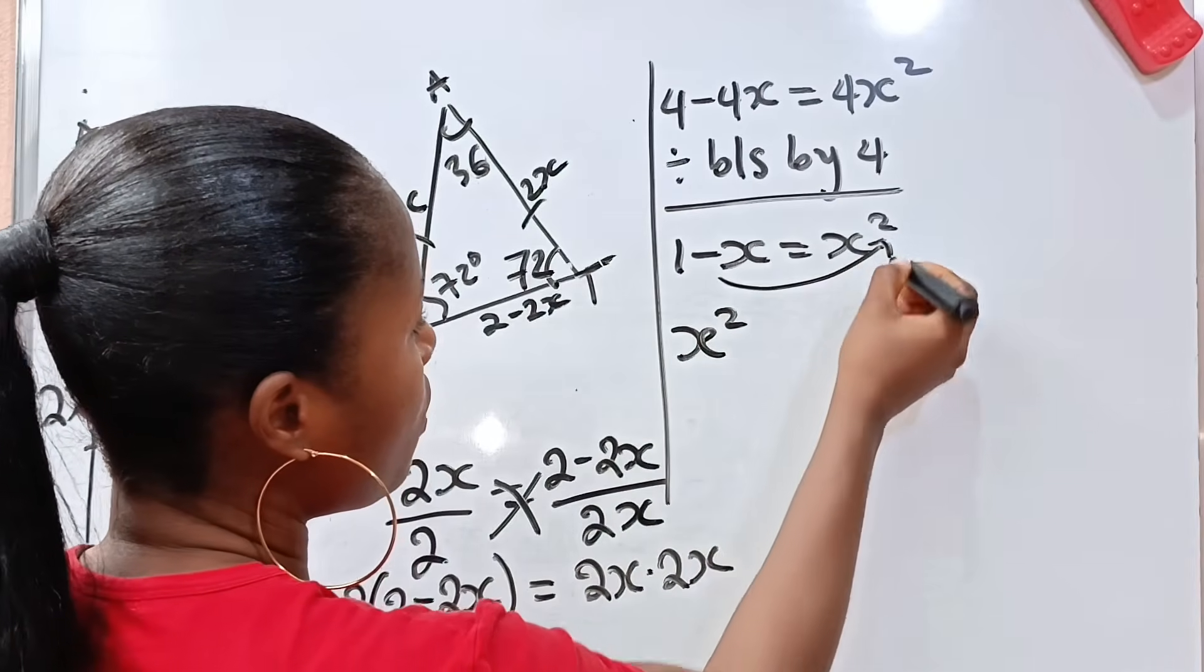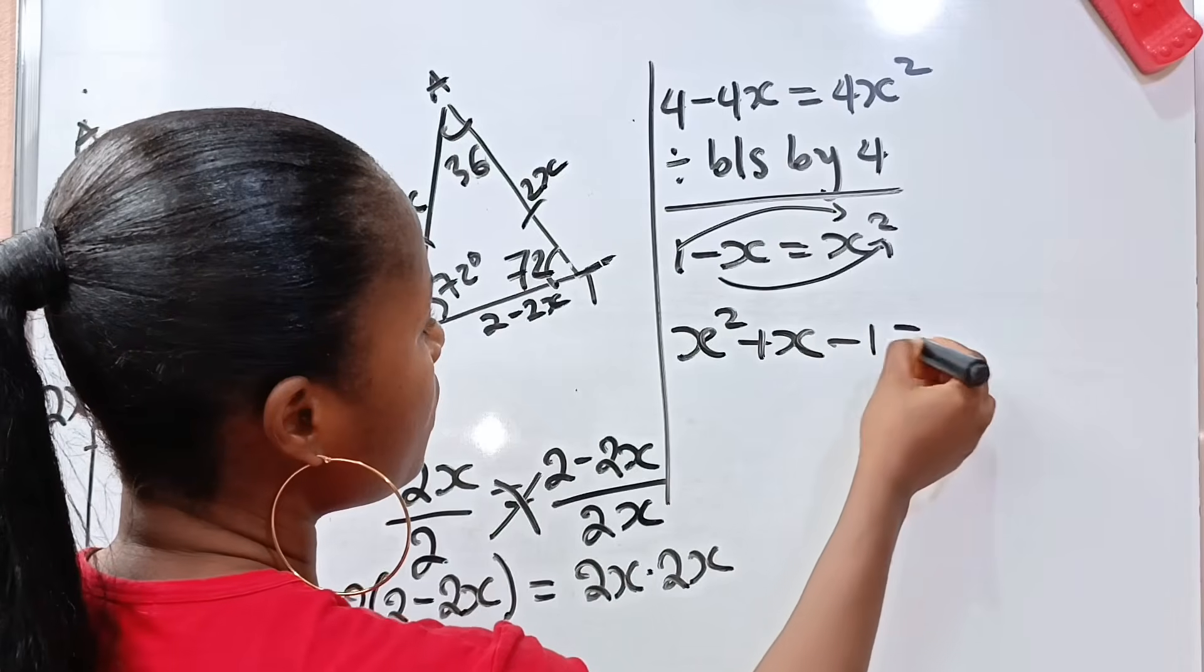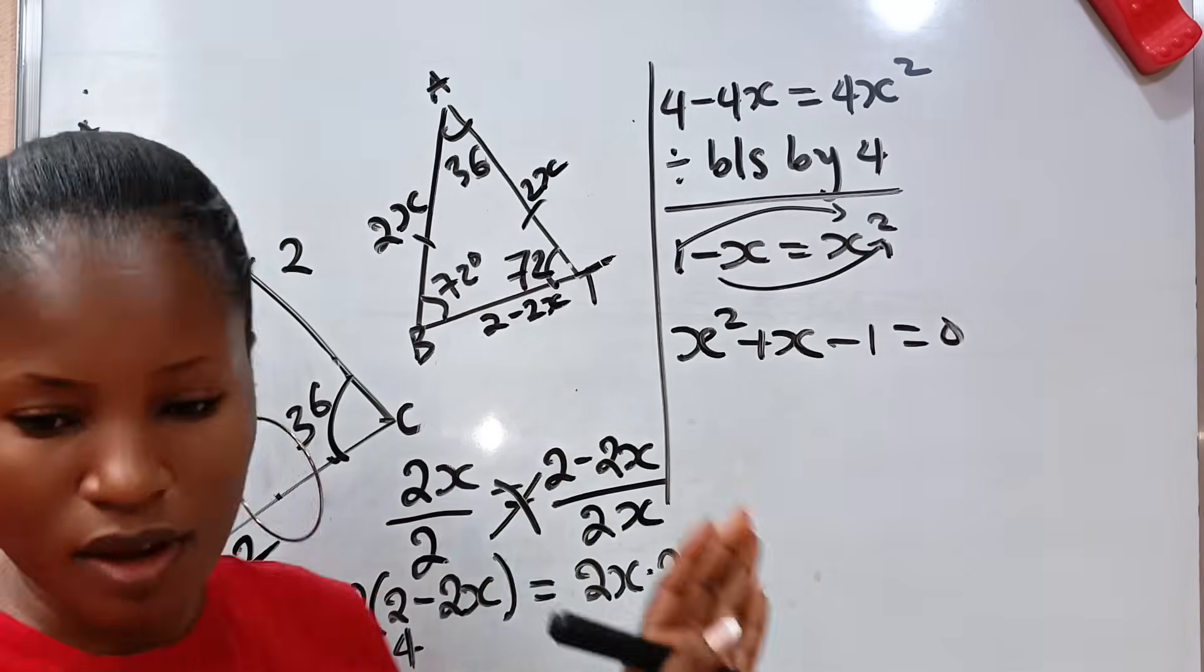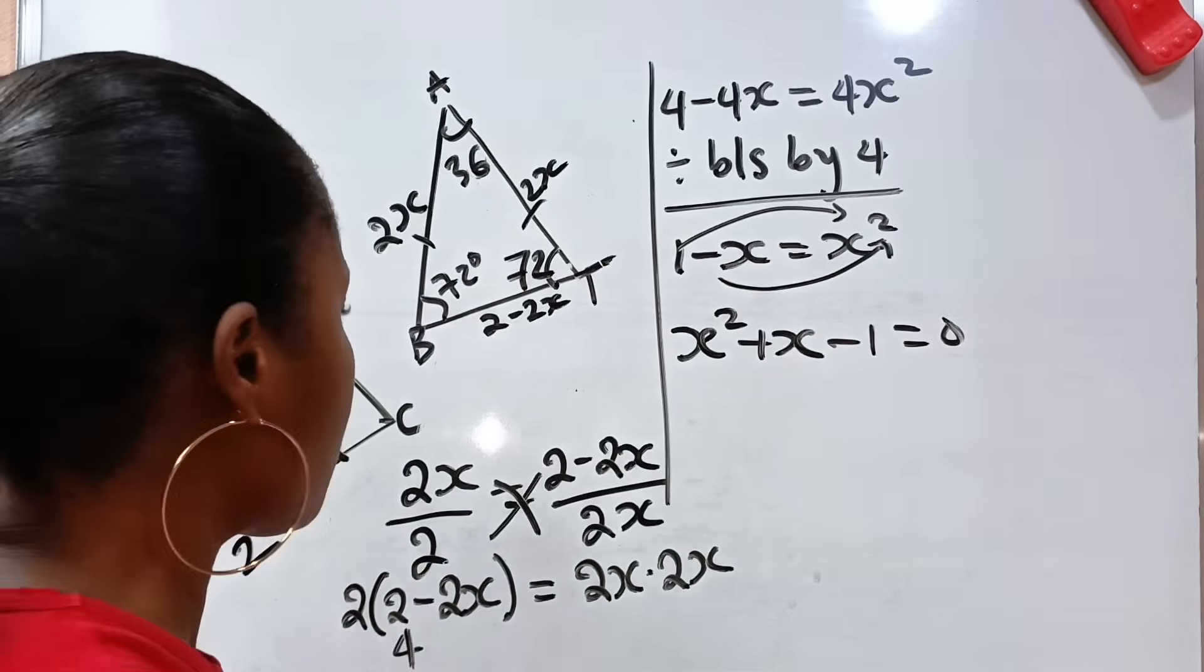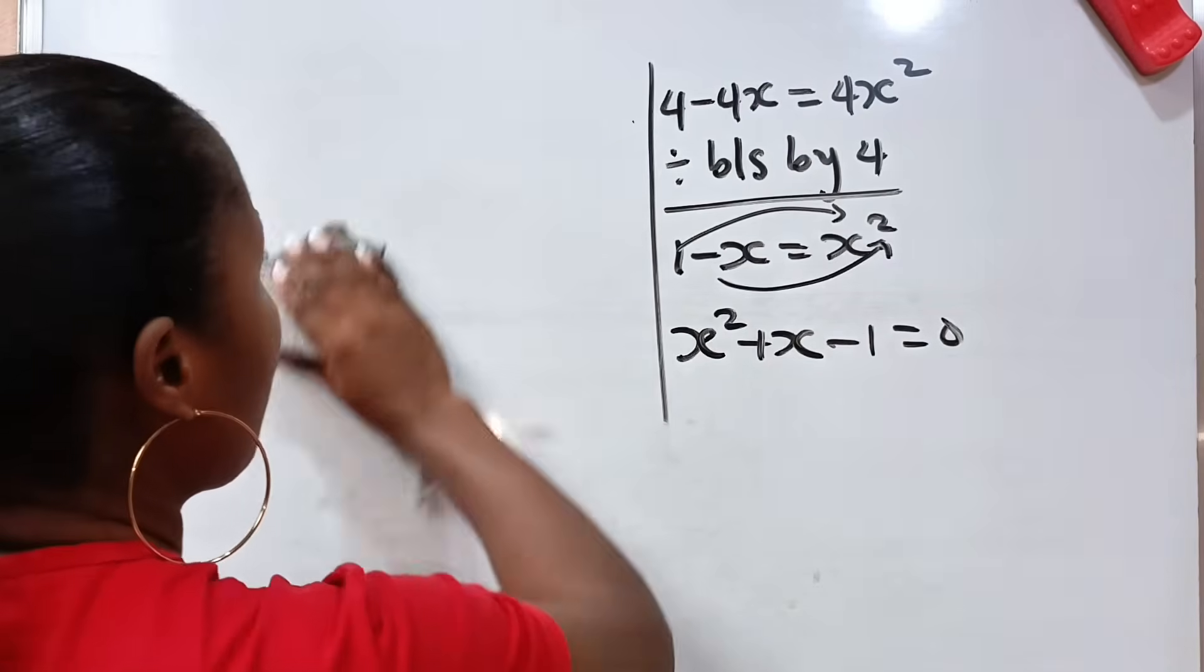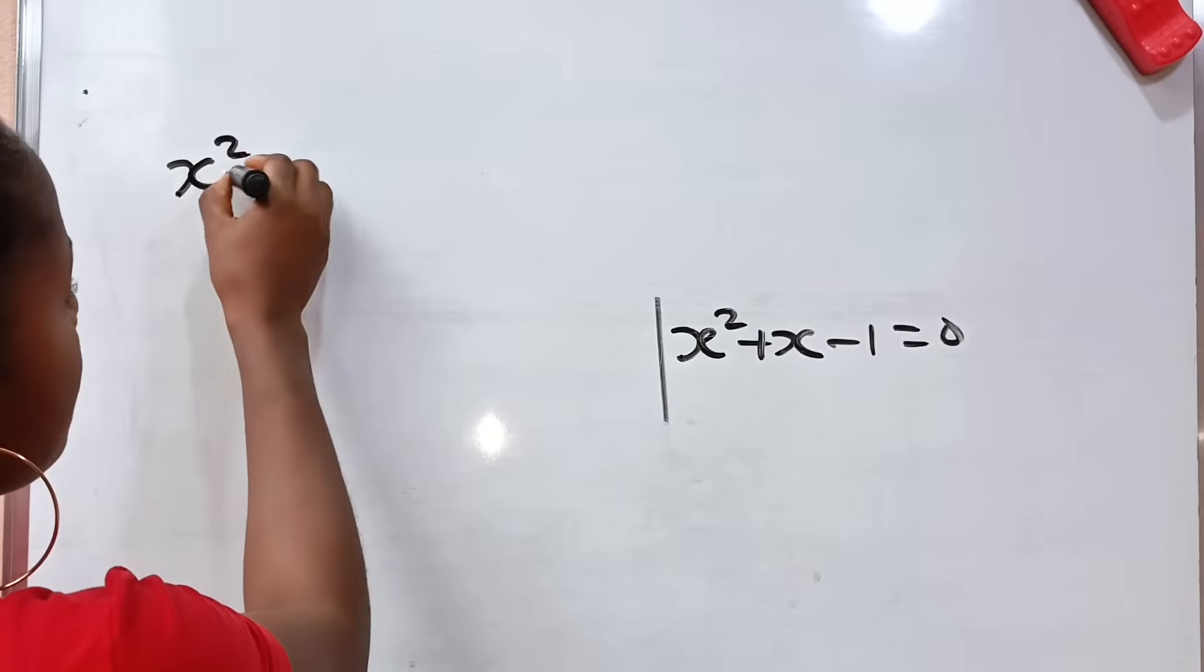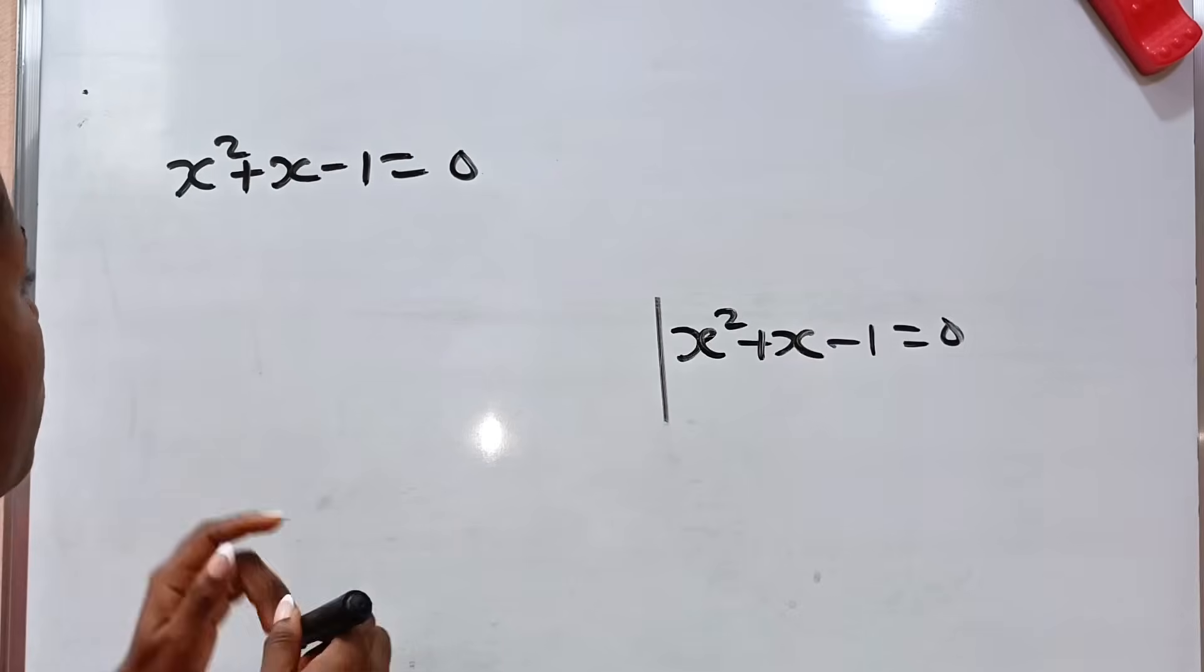Now we have a quadratic equation to solve, meaning that we are going to get 2 values for our X. But we all know that we cannot have 2 values for our X. So watch to the end and see how we selected the right answer. So let's arrange this well first as a quadratic equation. This X squared comes first, then minus X we cross to become plus X. And plus 1 we cross to become minus 1 is equal to 0. Now we are going to solve this using the quadratic equation formula. Let me explain everything. We no longer need the diagram. So let's have enough space to solve our equation.